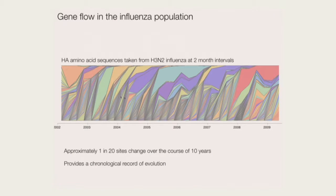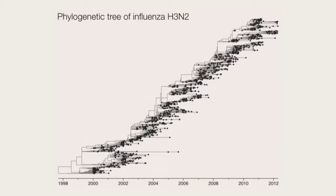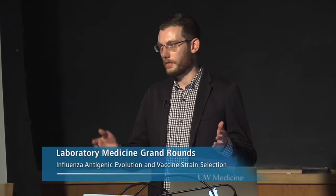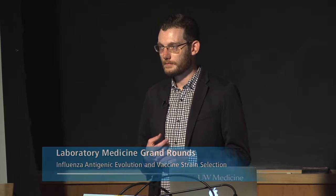Flu evolves very quickly. Looking at this as an evolutionary tree, in 2006 we have this diversity of viruses around the world. If we look backwards, we find it only takes until about 2004 for them to find a common ancestor. Basically, there is someone in the world right now sick with H3N2 such that in two or three years, all the flu in the world would descend from that person — because some strain will have an adaptive variant that lets it quickly take over.